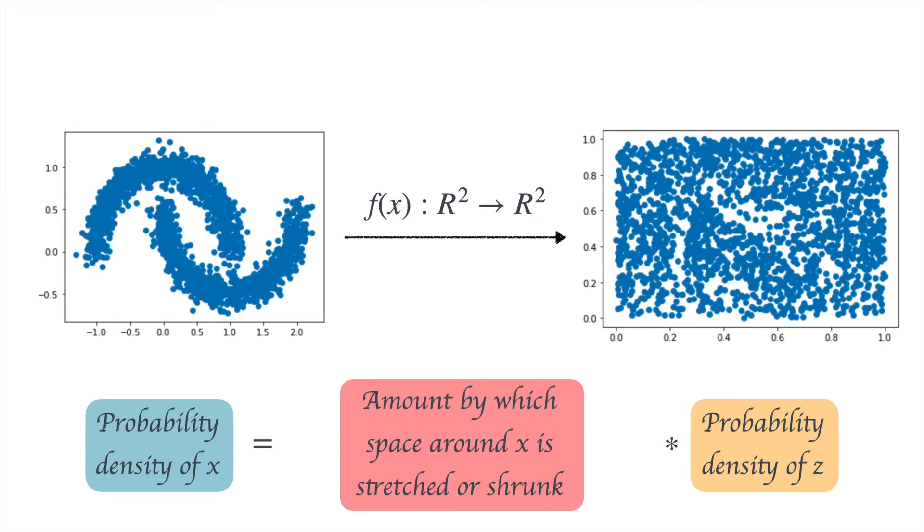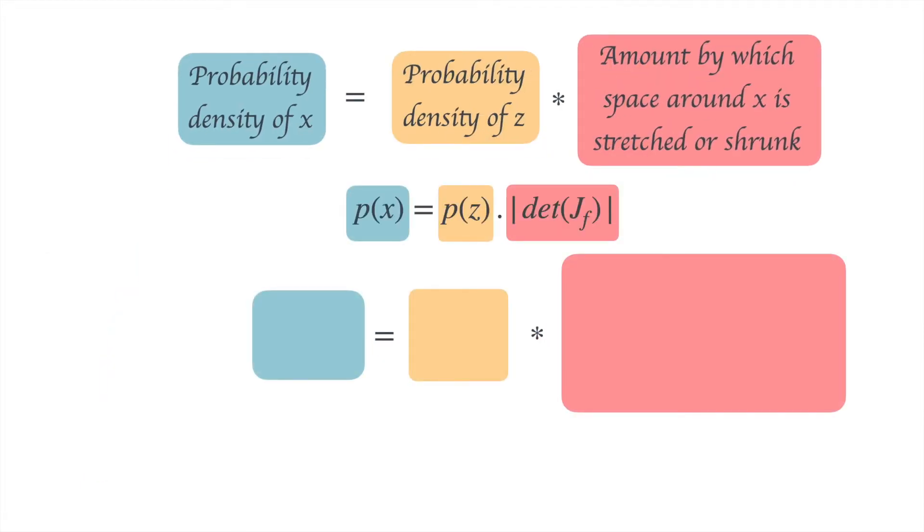This relationship holds for x regardless of its dimensionality. Even if x is two-dimensional, this relationship still holds. We can rewrite this in mathematical language in a more general form which works for any number of dimensions. p(x) equals p(z) times the absolute value of the determinant of the Jacobian of f. For clarity, we can write these terms as p(x1, x2) equals p(z) times the absolute value of this determinant.